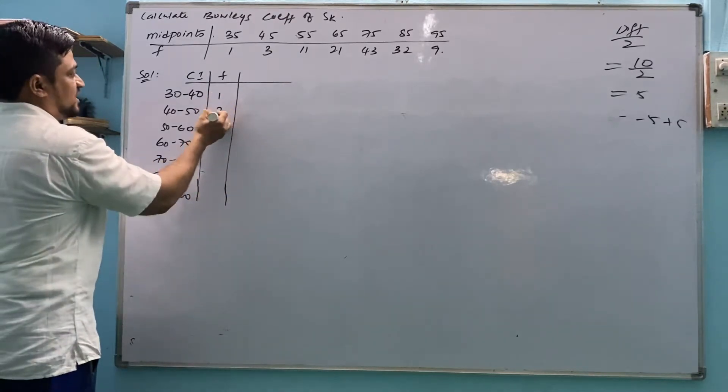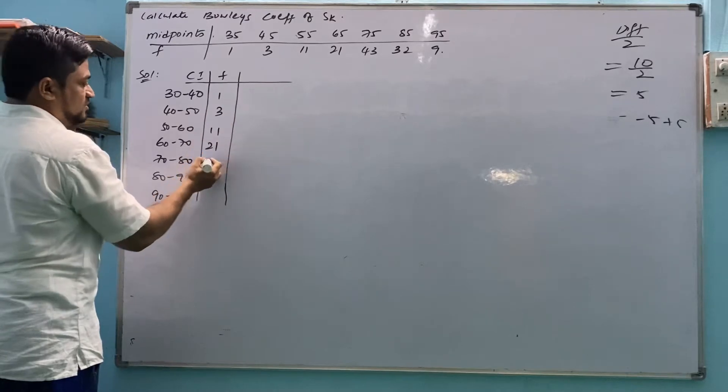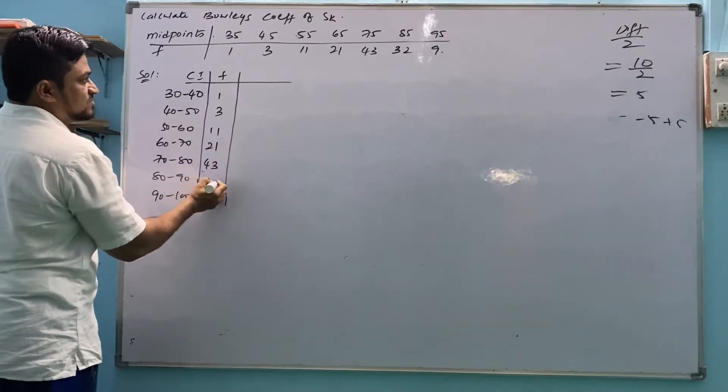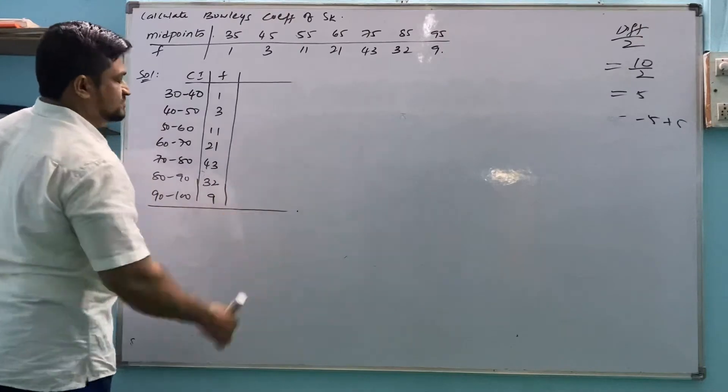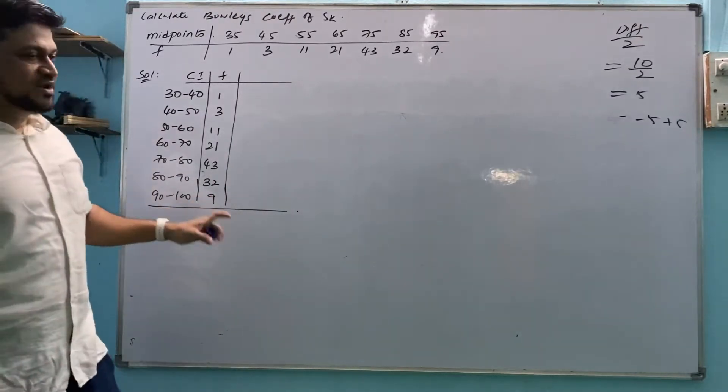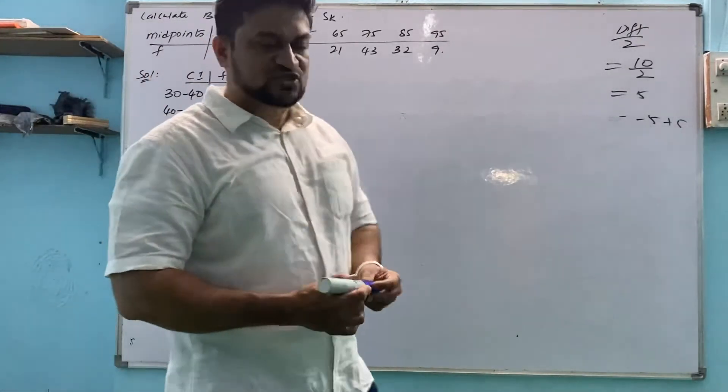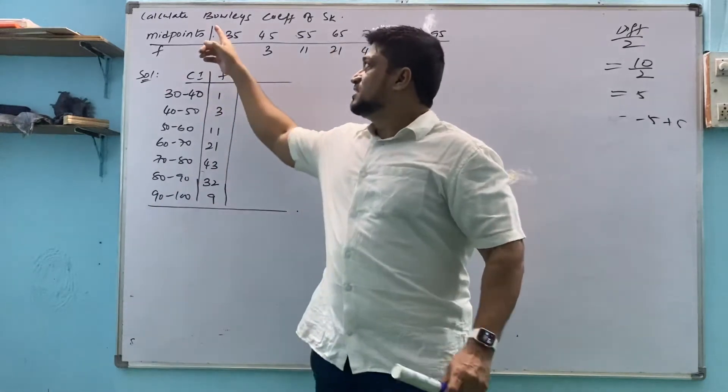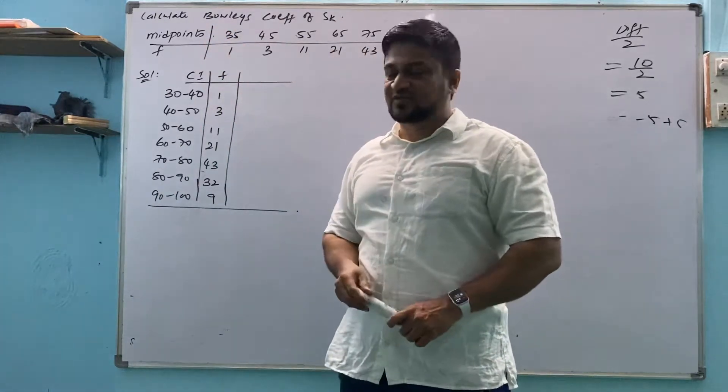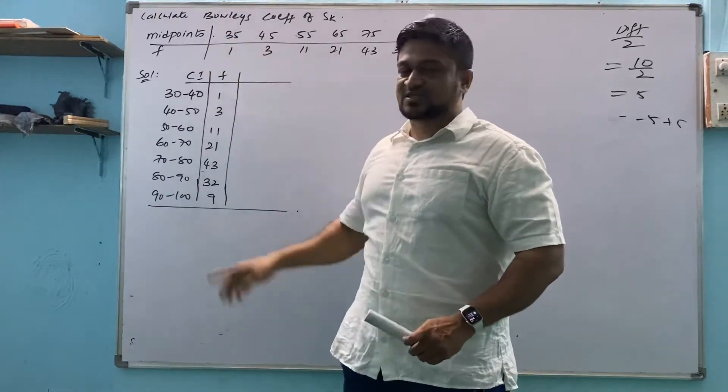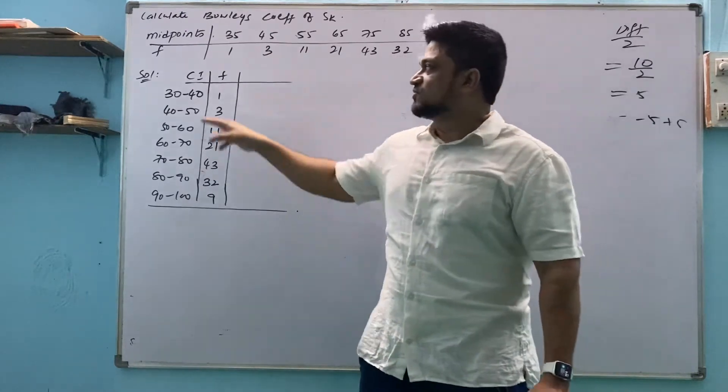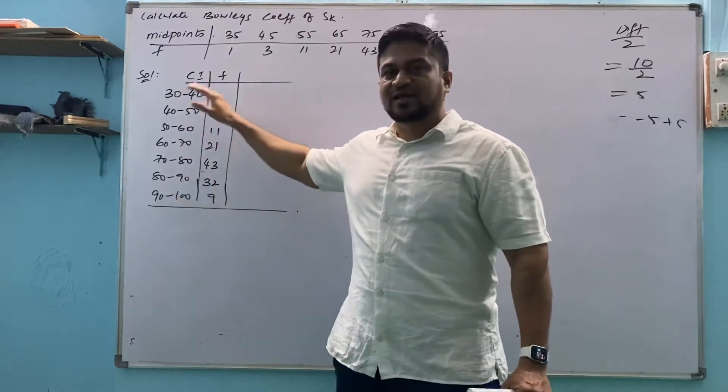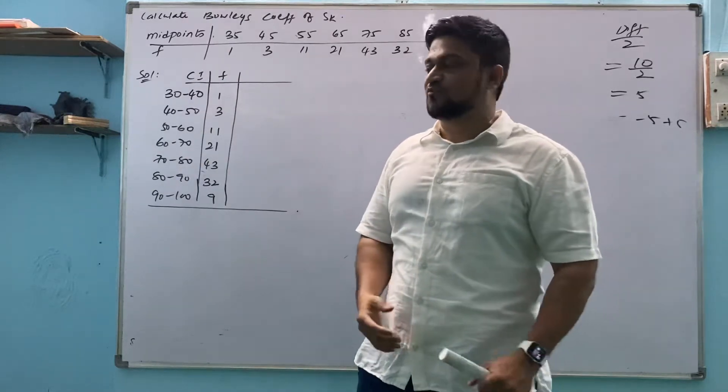Then frequencies: 1, 3, 11, 21, 43, 32 and 9. So class interval and frequency. Check the question. In question they have not given class interval and frequency. They have given midpoints and frequency. What do we have to do? We have to form the table. Form class interval and frequency. Then we have to move further.